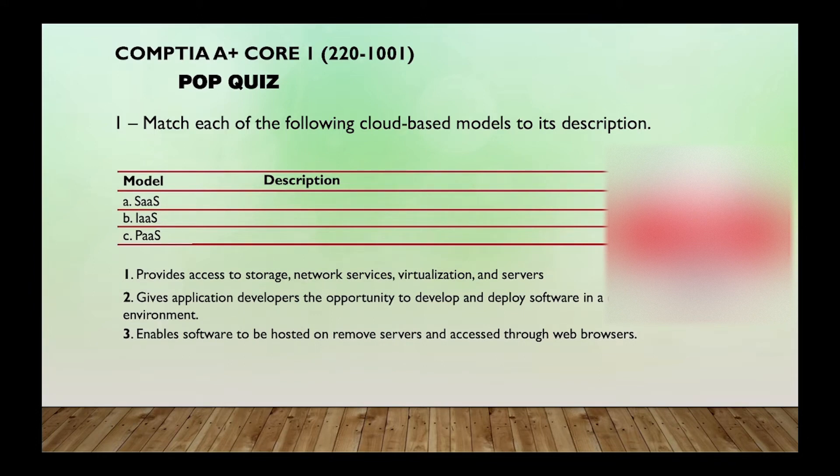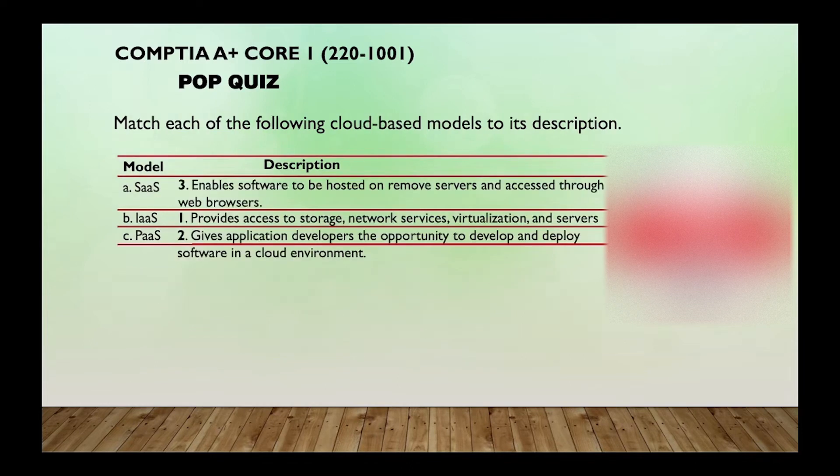Let's just go straight to the correct answer. All right, so the model of Security as a Service enables software to be hosted on remote servers and accessed through web browsers. Infrastructure as a Service provides access to storage, network services, virtualization, and servers. And Platform as a Service gives application developers the opportunity to develop and deploy software in a cloud environment.